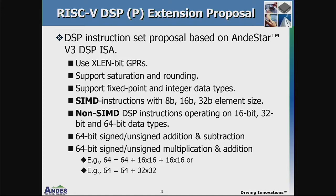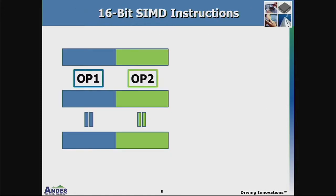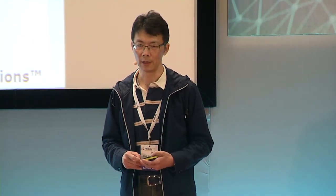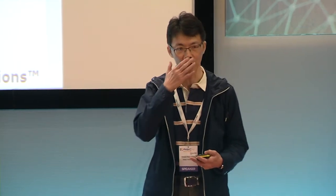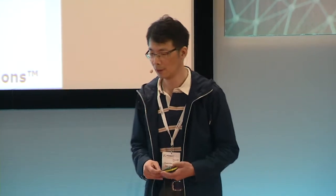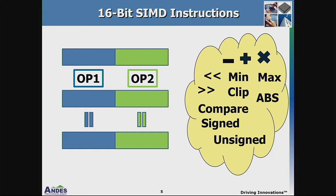Here is a simple illustration of 16-bit SIMD instructions on a 32-bit architecture — it processes two elements together, which in vector instruction set terms is a vector length of two. It supports operations of multiplication, addition, subtraction, left shift, right shift, minimum, maximum, clip, absolute, and compare.